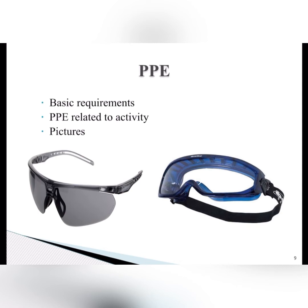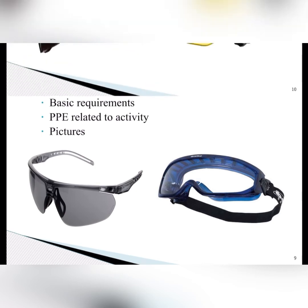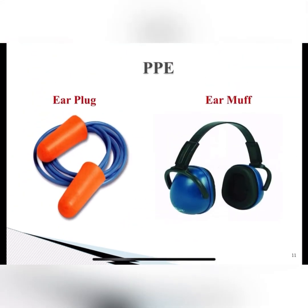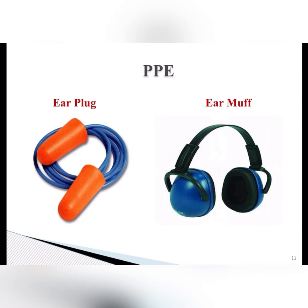Here are some images of PPE items — for example, a pair of safety glasses. You can see the yellow hard hat, which is a normal yard hard hat, and the red one is called a full brim hard hat. These are ear protections. The maximum permissible noise level is 85 decibels. One must wear earplugs when noise crosses that limit. Ear muffs are used for higher noise levels. Do remember, hearing loss is quite progressive.